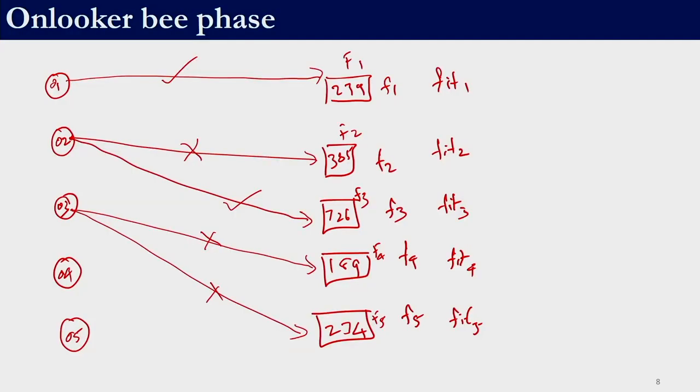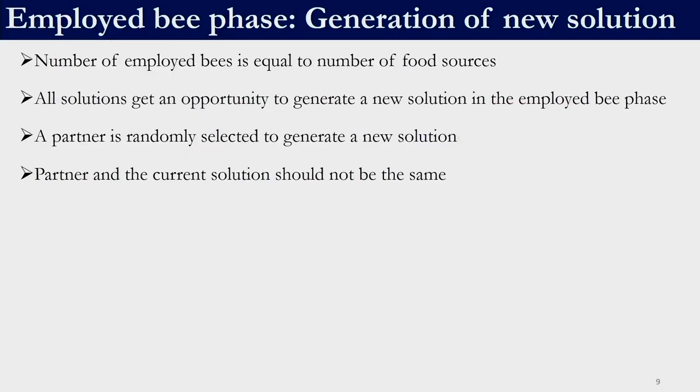This is essentially the onlooker bee phase and the employed bee phase. In ABC algorithm, a unique feature keeps track of the number of failures. Whenever a solution is used to generate a new solution and the new solution is better, it is accepted via greedy selection. But if a solution fails to generate a better solution, we keep track of the number of failures. This trial vector gives a measure of how many times a solution has failed to generate a better solution.